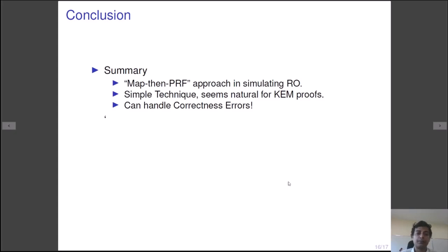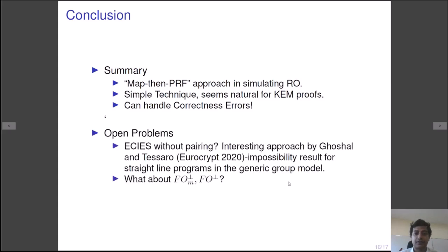To conclude, we introduced the map-then-PRF approach in simulating random oracle in memory tight setting. This technique is quite simple and it seems natural for key encapsulation mechanism proofs. Interestingly, as we show in the paper, it can also handle correctness errors. Many open problems remain.